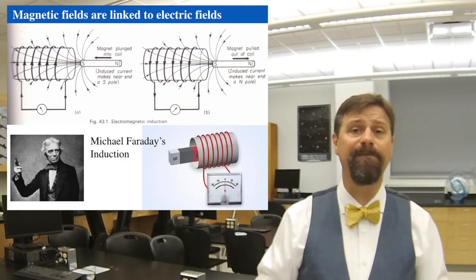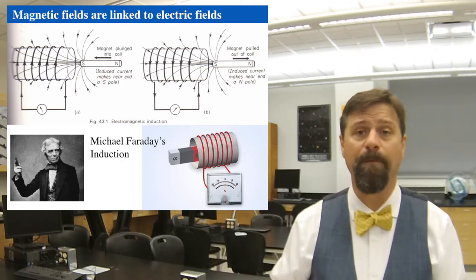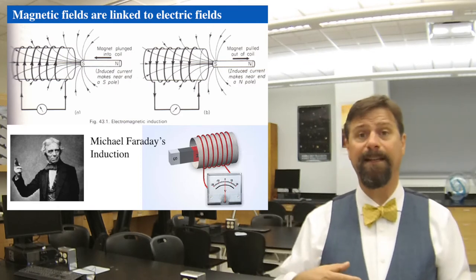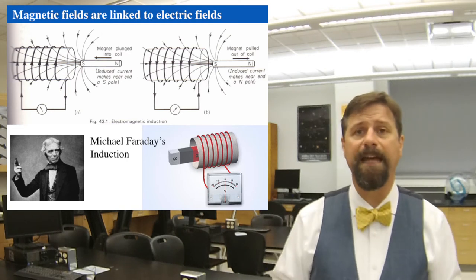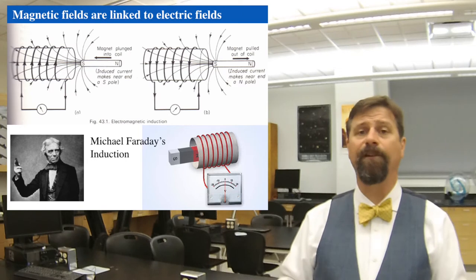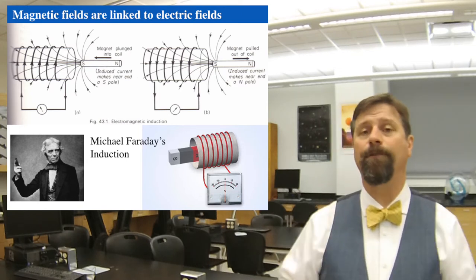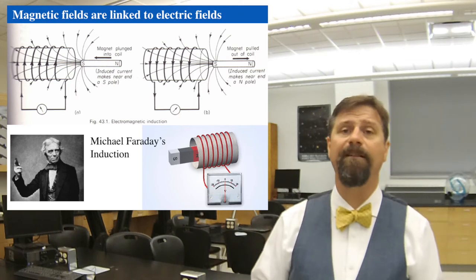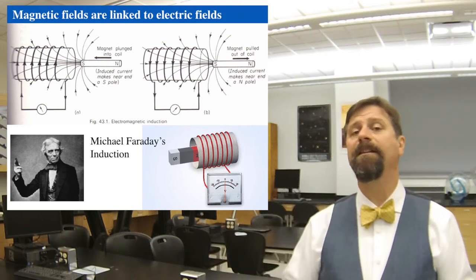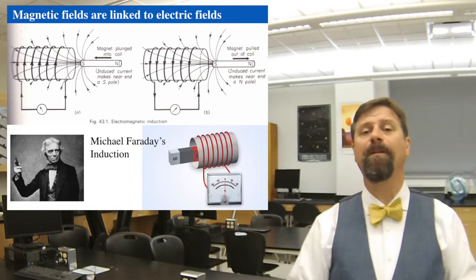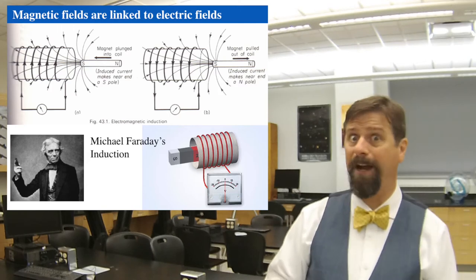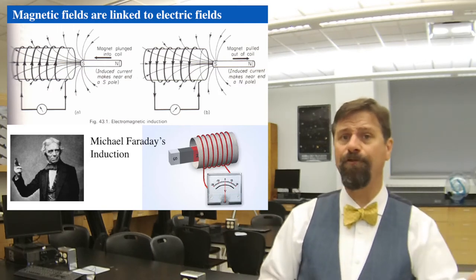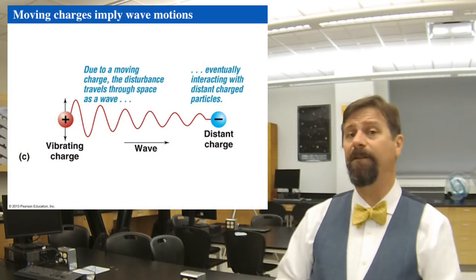Likewise, if you take a fixed magnet — an iron magnet or a bar magnet — and spin it, it will create an electric field. That's part of the way we get electricity out of hydroelectric dams. You create large bar magnets, and as the water goes over the waterfall it turns turbines, and the turbines spin magnets wrapped around coils of wire. Those wires then have an electric current created by the spinning magnetic field. So there's a link between the motion of an electric field and the creation of a magnetic field, and vice versa.